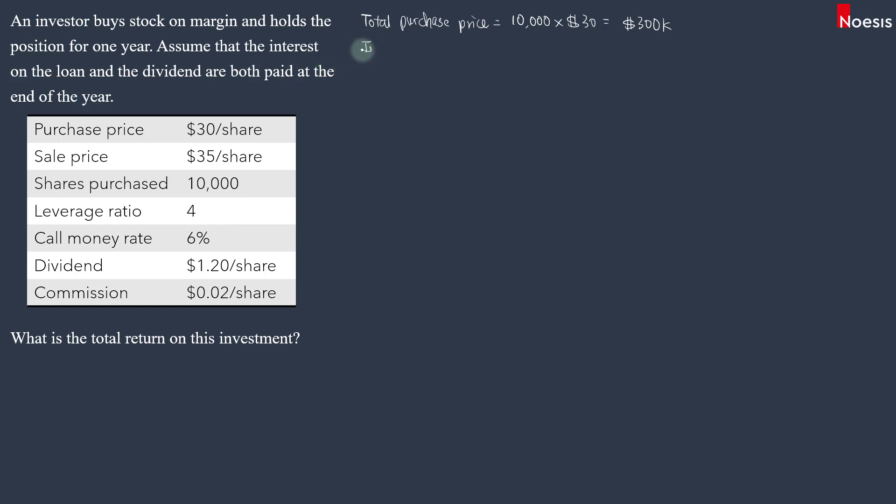The formula here will be to take the initial margin. This is equals to 1 divided by the leverage ratio. And the leverage ratio here is 4 times. So that's 1 over 4, which is 25%.